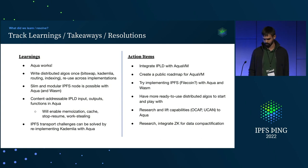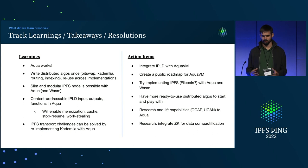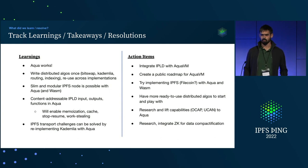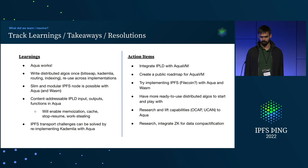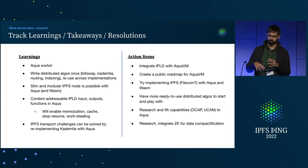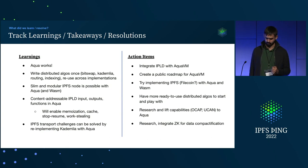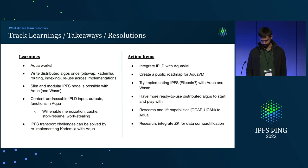We want to have more ready-to-use recipes and algorithms to start and play with, so that users try the solution rather than just the language and can build from there. As Aqua is a language designed exactly for peer-to-peer networks, it could be beneficial to lift very special needs — which we usually express in low-level code — up to Aqua; for example, a capabilities model. We will research this field, and also research and possibly integrate zero-knowledge proofs — in particular, we are interested in Lurk and integrating it with Aqua.